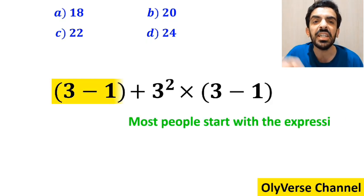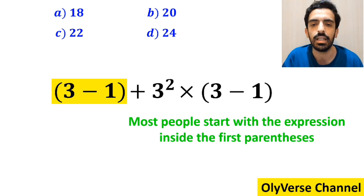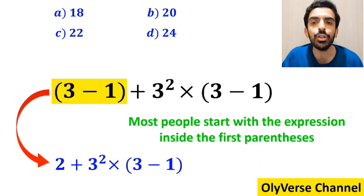most people start with the expression inside the first parenthesis and they simplify this expression to 2 plus 3 squared, multiplied by 3 minus 1 inside the parenthesis.